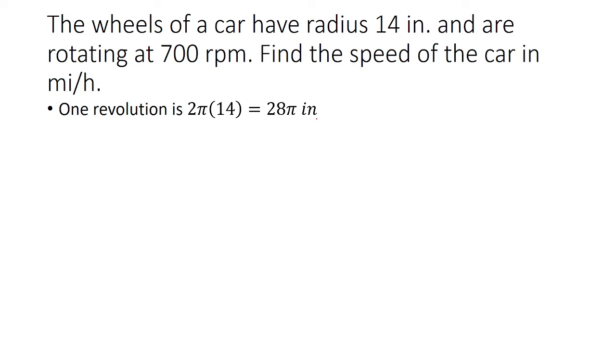So that's how much the wheel travels in one revolution. So in 700 revolutions, we're going to take 28π and multiply it by 700 to get 19,600π inches.